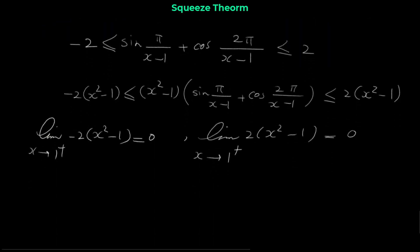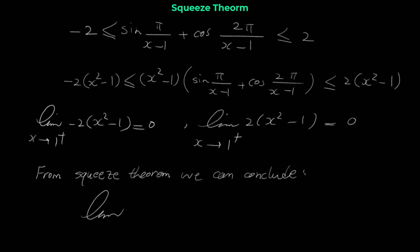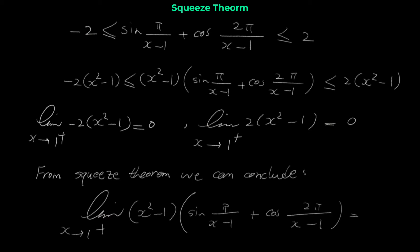Now that the limit of the left function is 0 and the limit of the right function is 0, from the squeeze theorem we can conclude that the given limit is also 0. So we write: from squeeze theorem, the limit as x approaches 1 from the right of (x² − 1) · [sin(π/(x−1)) + cos(2π/(x−1))] is also 0.